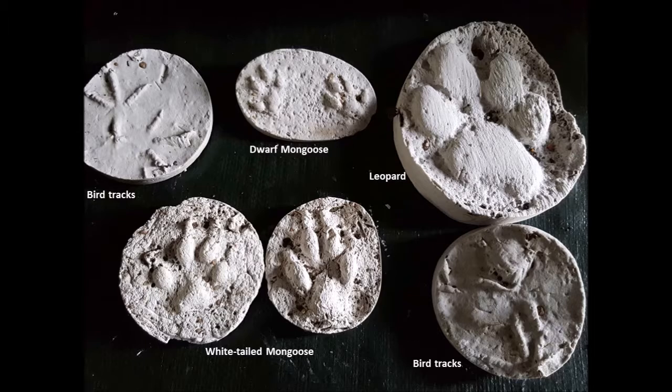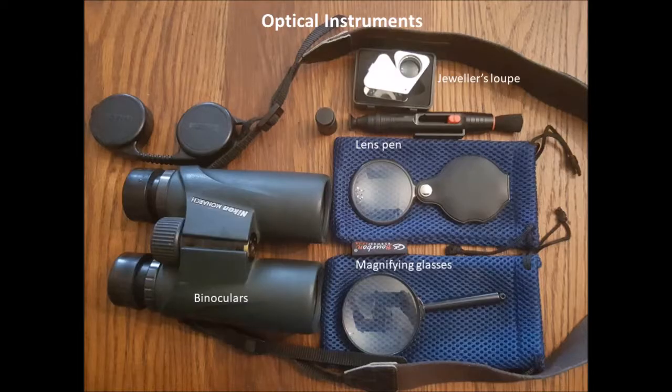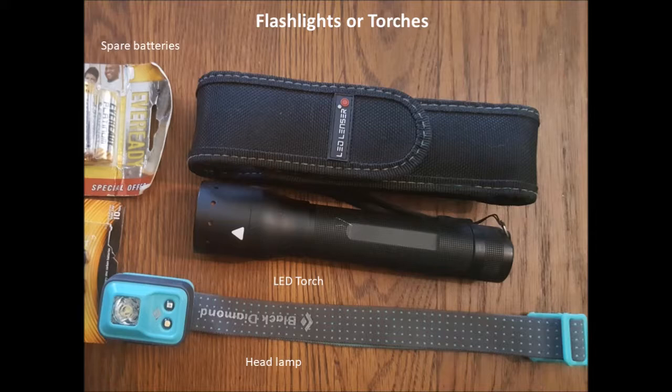Those track casts are negative impressions which you can turn around, push into sand, and make a positive impression. Optical instruments are among the most important tools for many naturalists — binoculars for birding, looking at nesting trees, or game viewing; a jeweler's loupe for looking at grass inflorescences to identify grass; and various magnifying glasses for small objects. A lens pen is useful to clean all your instruments — it has a brush on one end and a cleaning pad on the other.